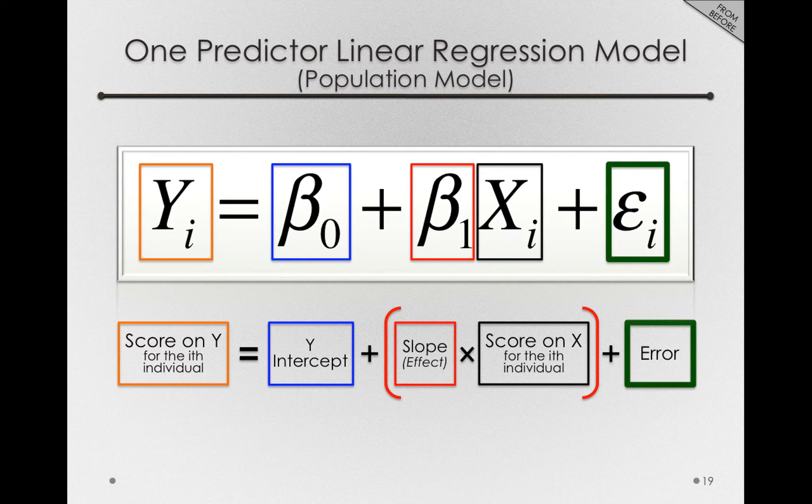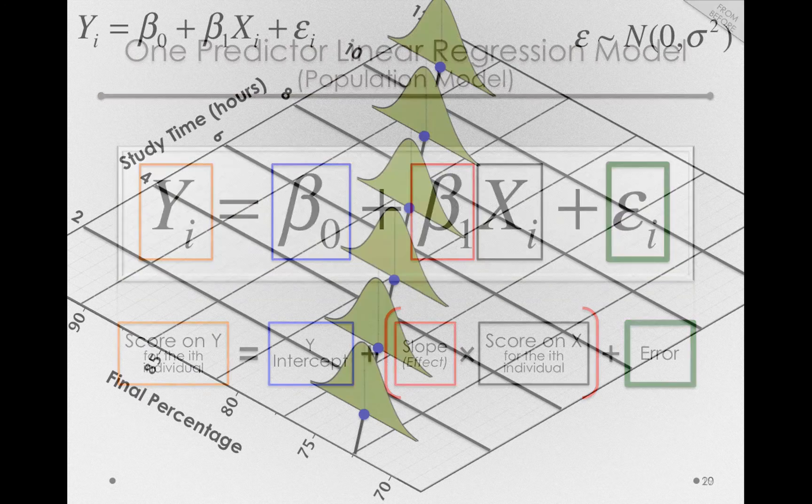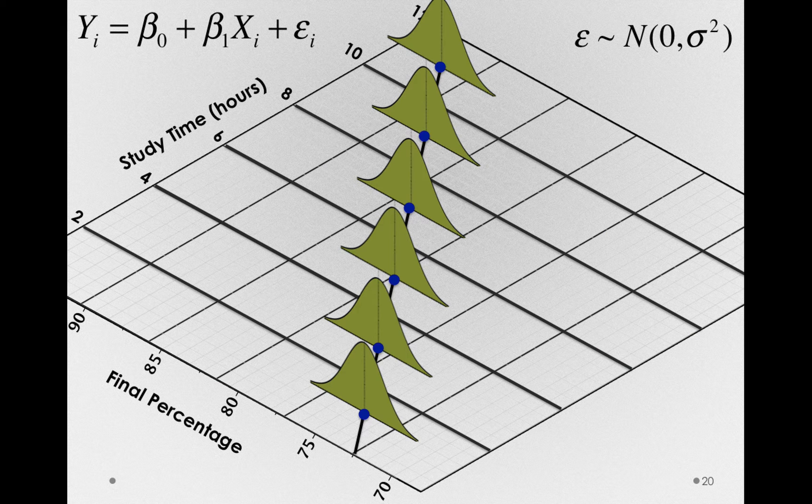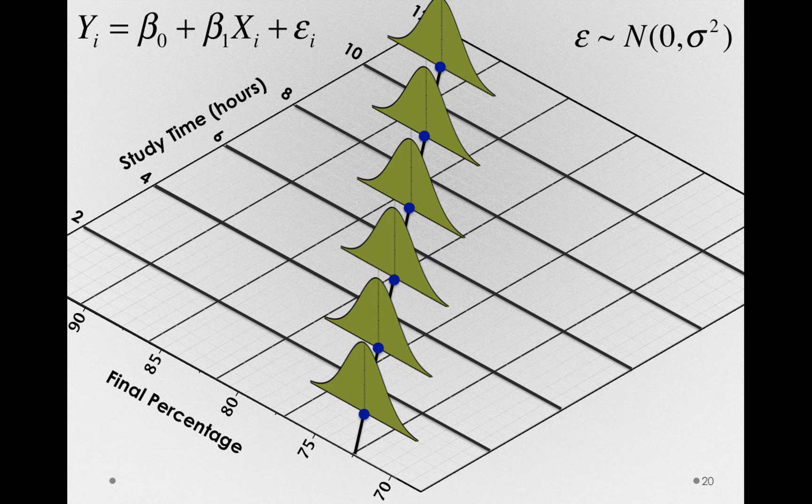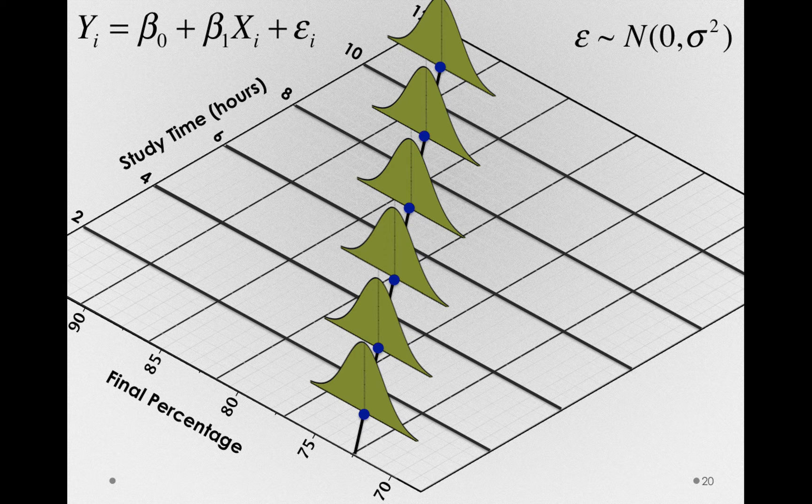Now individual error, like always, is a representation of the degree to which individuals differ from what is predicted by the model. What is really predicted by our model is the mean of all people at a particular level of x. So error in our model is the degree to which a person differs from all the people at that person's level of x.